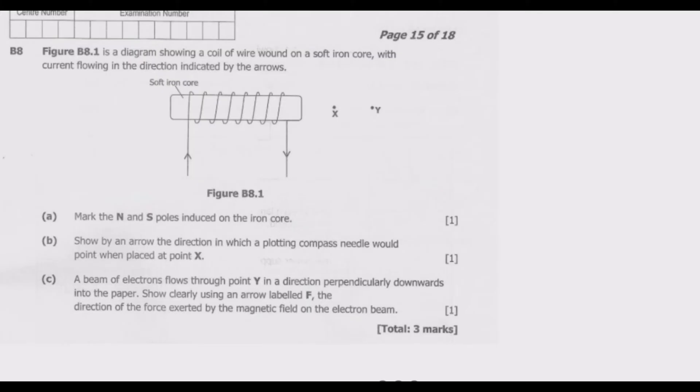Mark the north and south poles on the iron core. To find the north and south poles induced on the iron core, we use the right-hand grip rule. Basically, we need to hold this coil using our right hand, and the fingers should point in the direction of current.